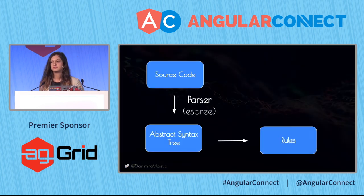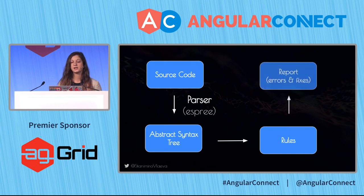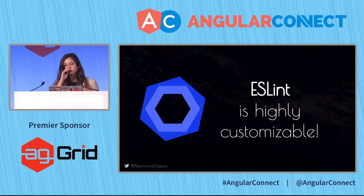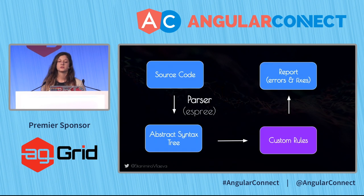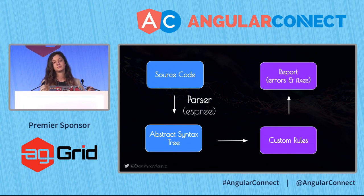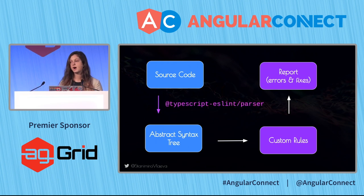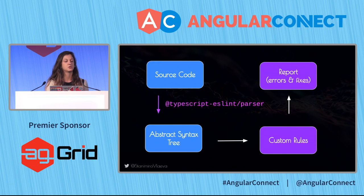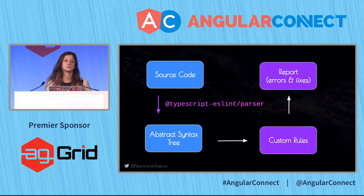After that, ESLint passes the AST to your rules. The rules analyze the AST and can generate a report containing errors in your code and different ways to fix that code. ESLint is highly customizable — you can write your own custom rules which generate custom errors and fixes. You can also provide a custom parser, which is why we're able to use TypeScript and ESLint together. There's a great community project called TypeScript ESLint, which contains a parser and set of rules for TypeScript.